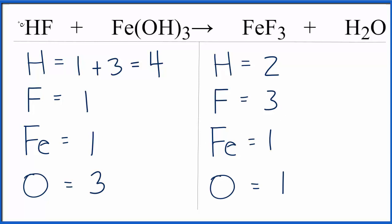To fix the fluorines, we'll put a coefficient of three in front of the HF. So, one times three, that gives us three. So that fixed the fluorines, but we need to update the hydrogens.